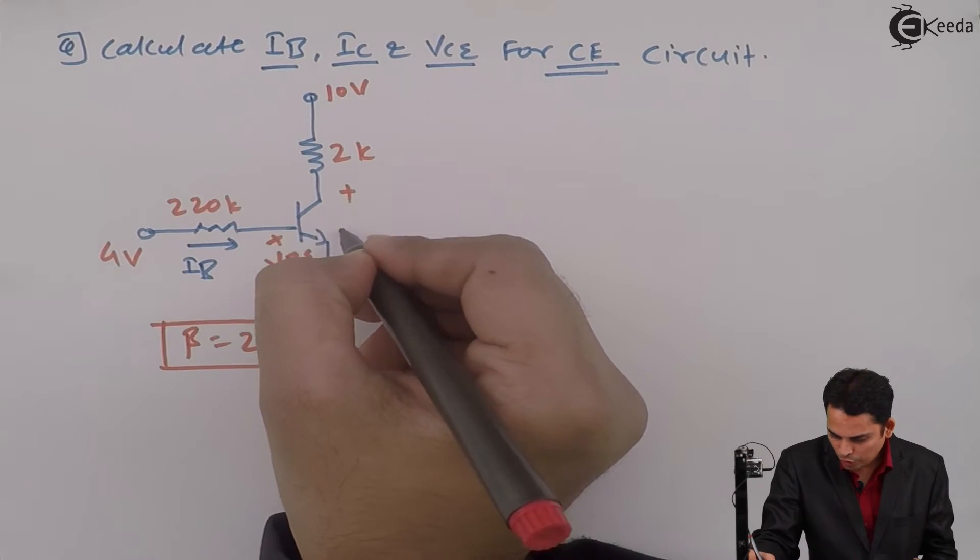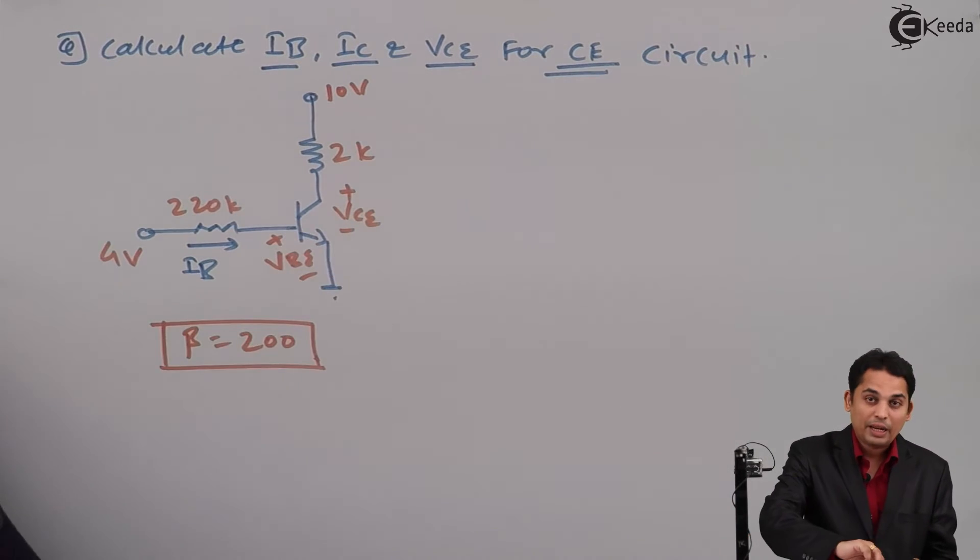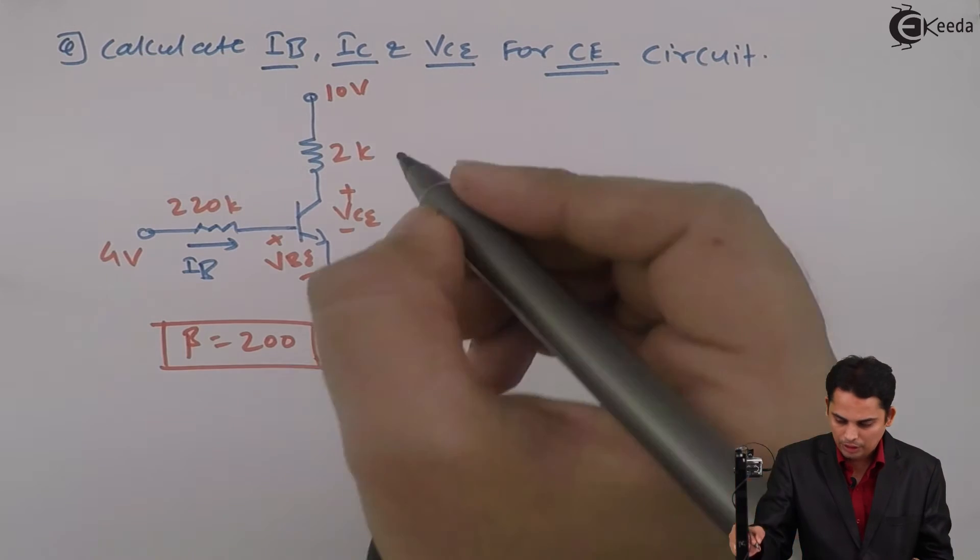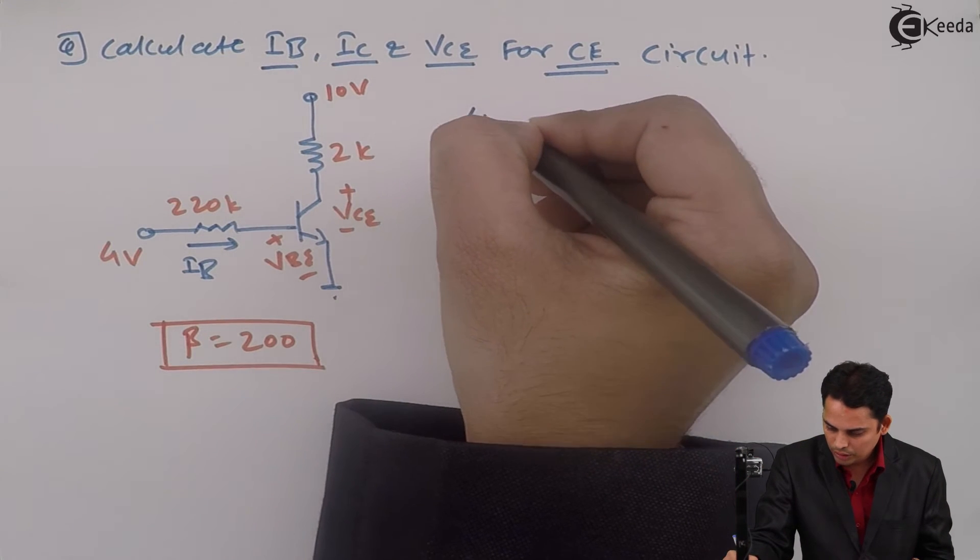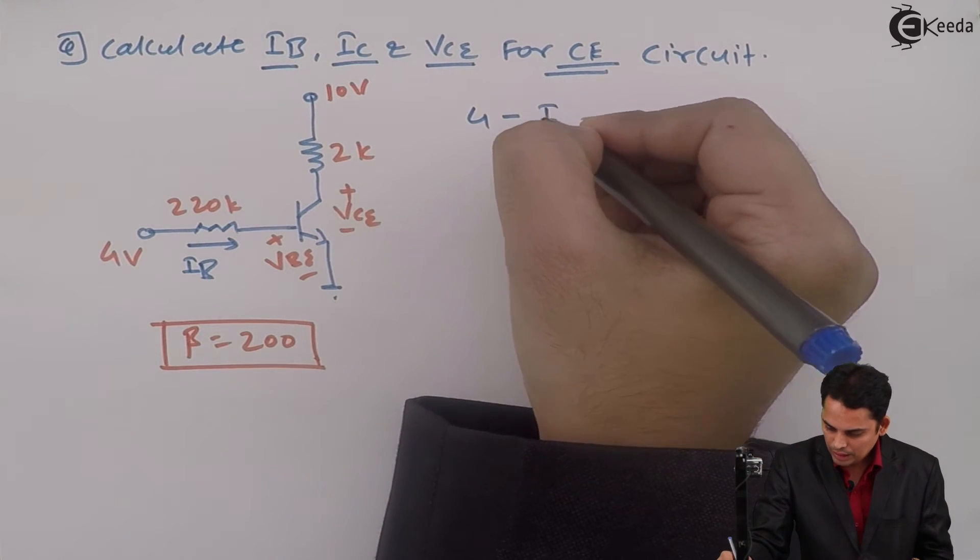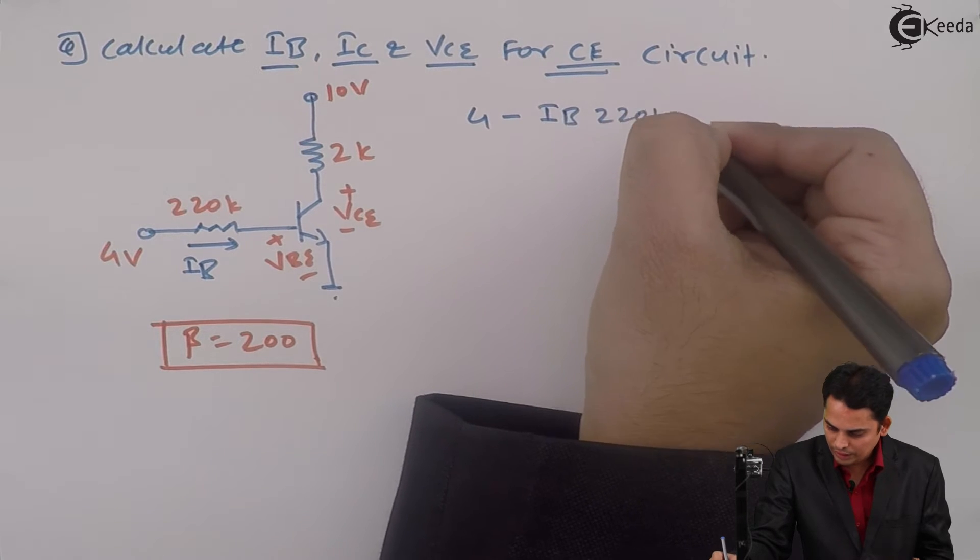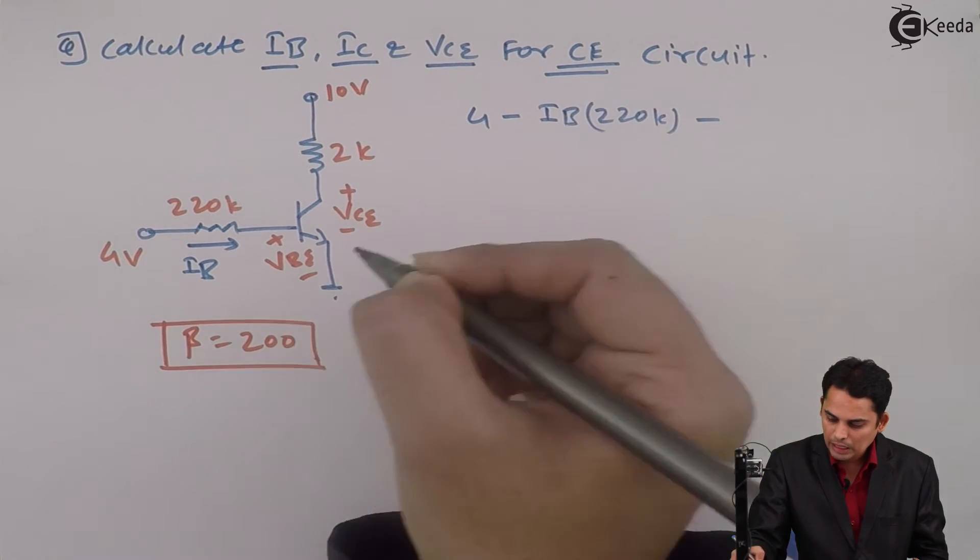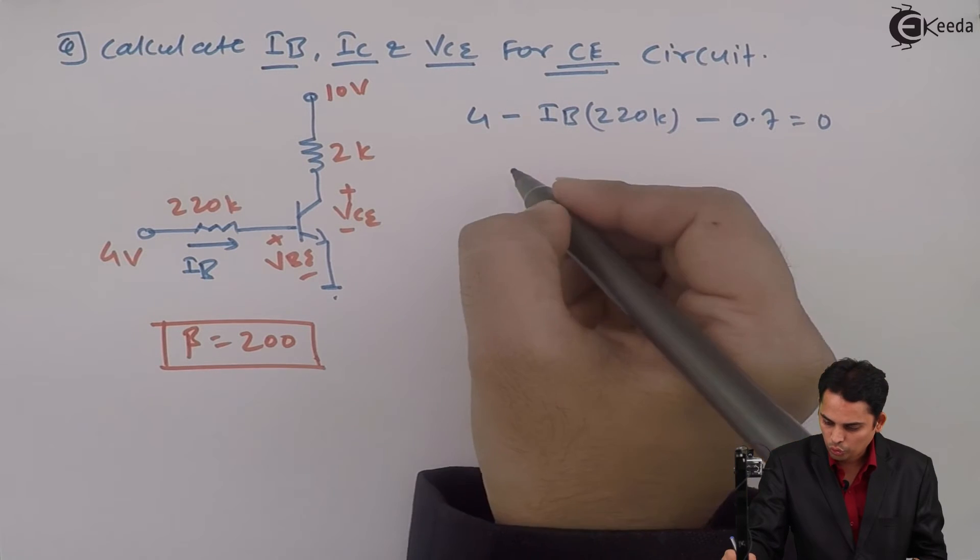Between these two points will be VCE. Apply the KVL to the input. The equation will become 4 volts minus IB into 220K minus VBE, which is 0.7 volts, equals 0.